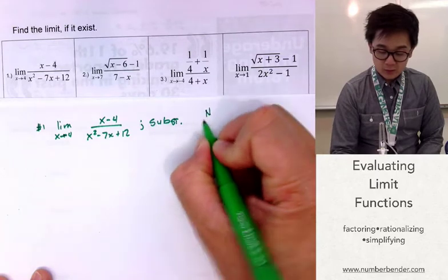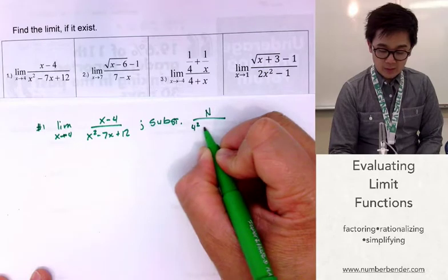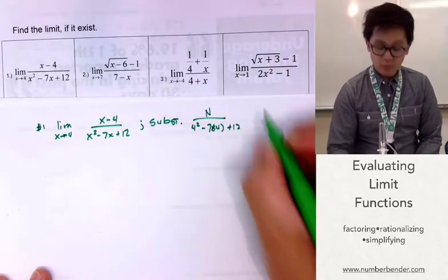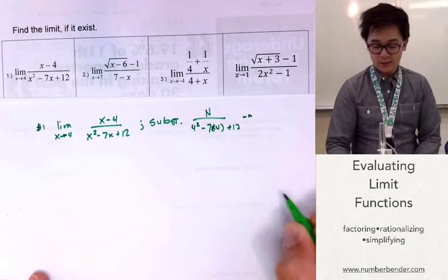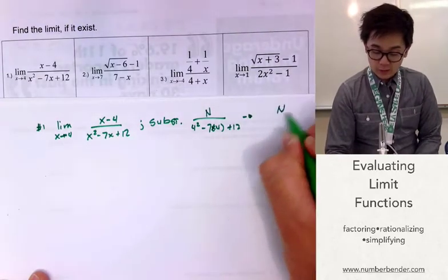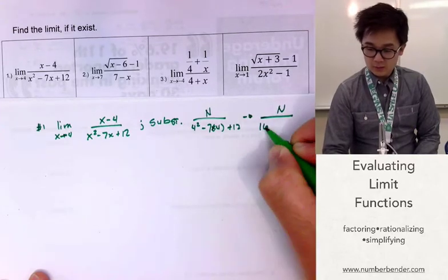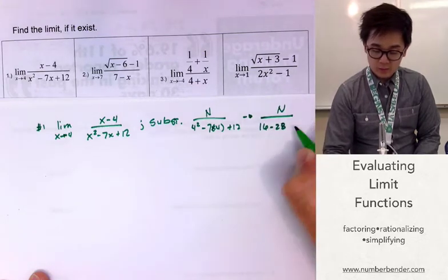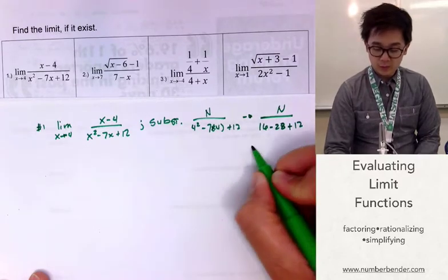Let's try substitution first with x equal to 4. We have 4 squared minus 7 times 4 plus 12 in the denominator. I'm just going to leave the numerator because I only need to check if it's undefined at x equal to 4. So we'll have 16 minus 28 plus 12.